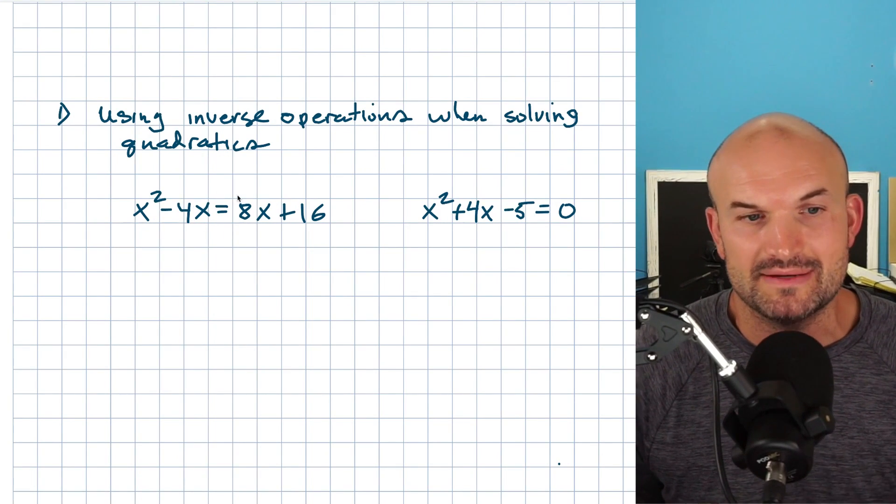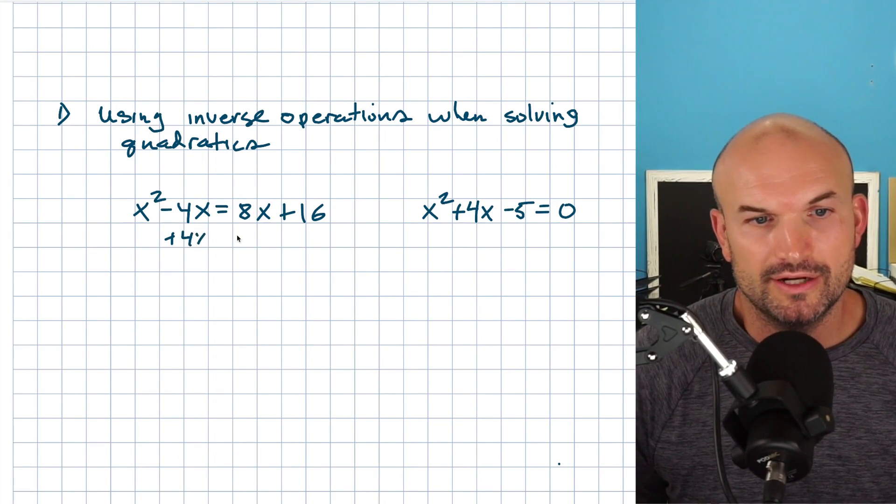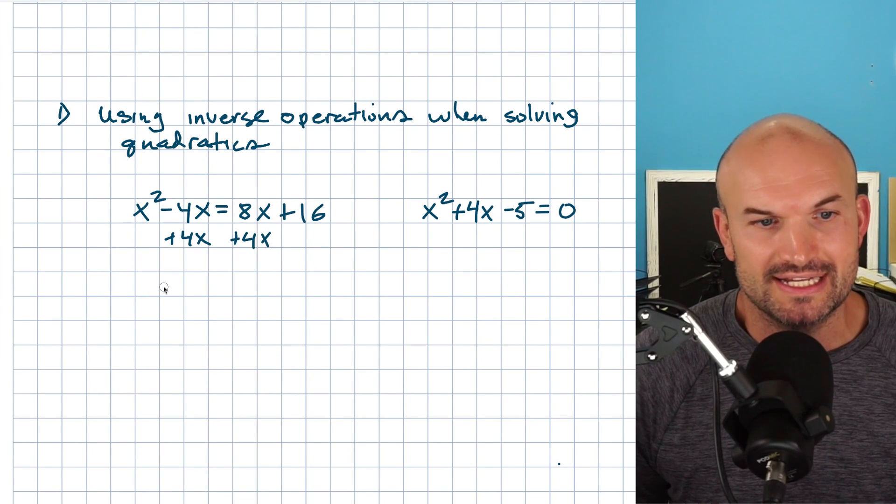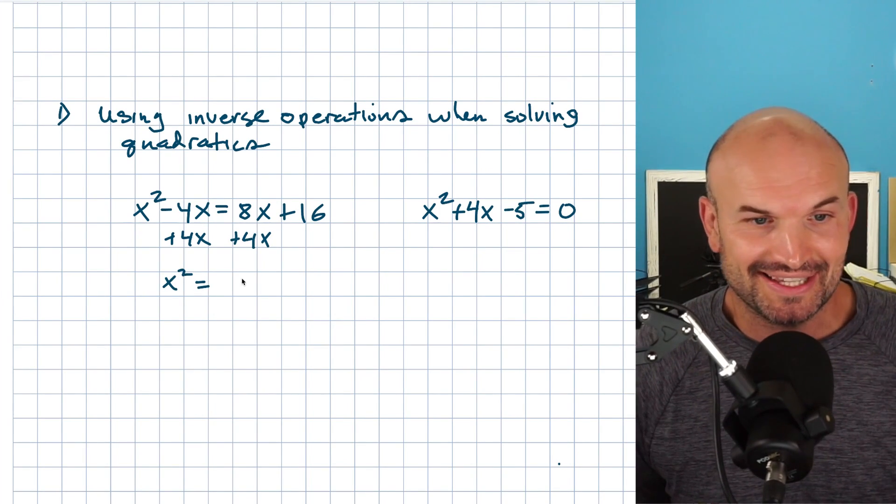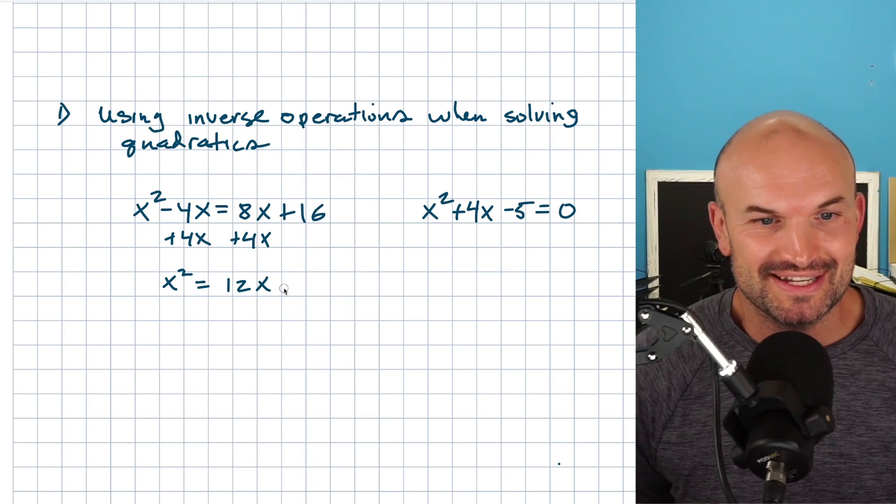a lot of times what I'll see students do is they'll say, alright, well, let's go ahead and add the four X to the other side. And then I have an X squared isolated, right? Which is 12X plus 16.